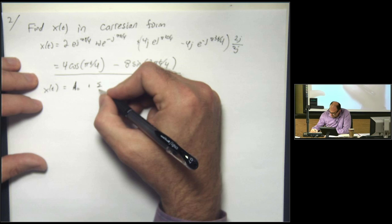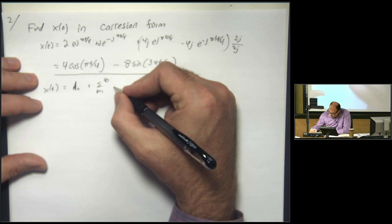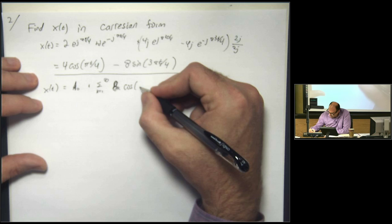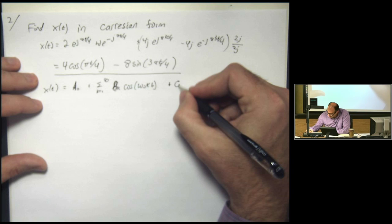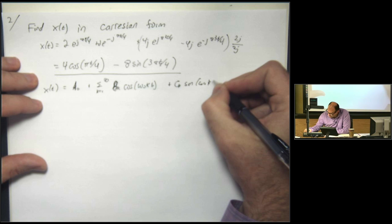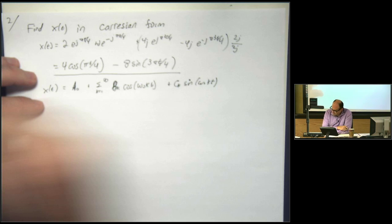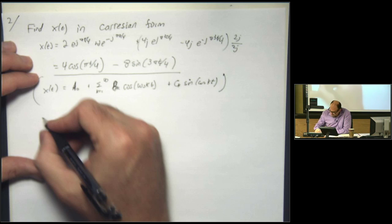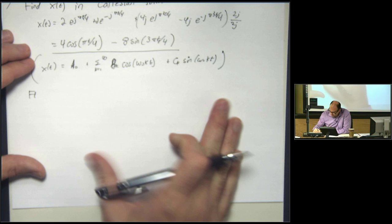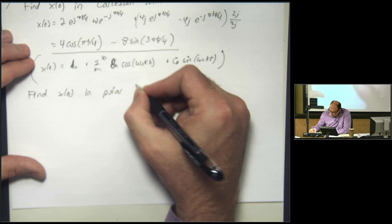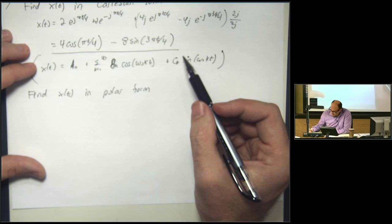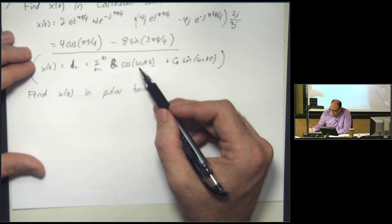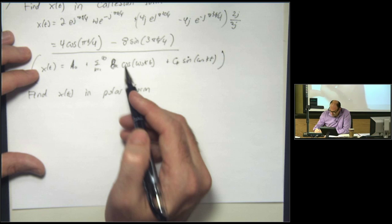The general Cartesian form is x(t) = A₀ + sum from k=1 to infinity of [B_k cos(kω₀t) + C_k sin(kω₀t)]. To convert to polar form, we replace the sine with a cosine by applying a phase shift. A sine function shifted by +π/2 becomes a cosine, but it flips sign, so we need to be careful about the sign.